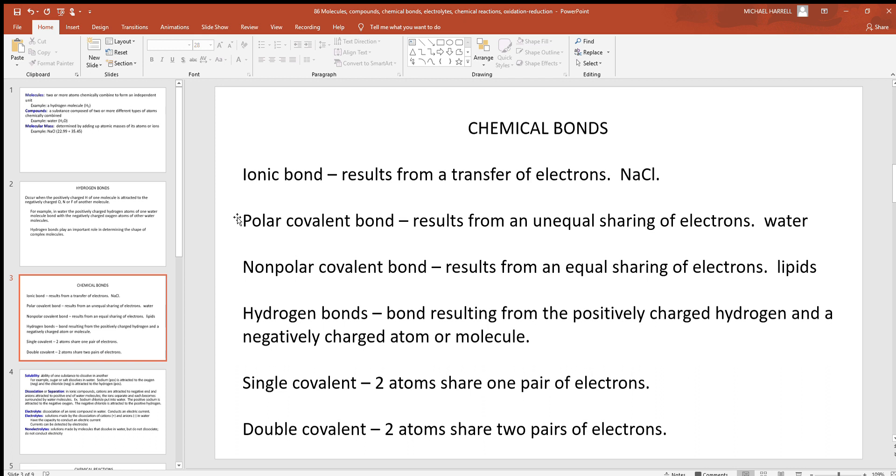After that, we have covalent chemical bonding. Here's not where ions are being transferred, here's where they're being shared. So polar covalent bonding results from an unequal sharing of electrons. Water is a good example of that. Non-polar covalent bonding results from an equal sharing, the lipids. And this explains why oil and water doesn't mix. The little water molecules are like little magnets. They're attracted to each other. The lipids, with this equal sharing of electrons, don't have polarity or charges. The water is not attracted to them. So that's why oil and water doesn't mix.